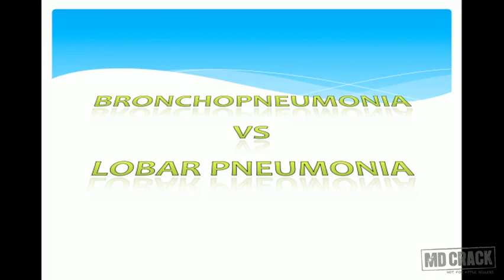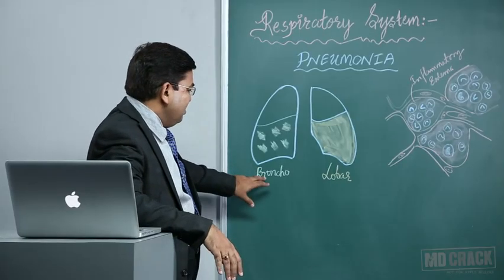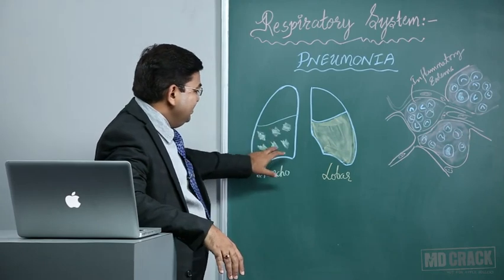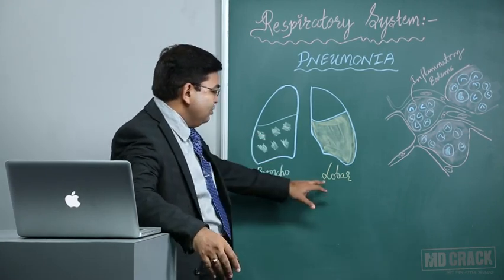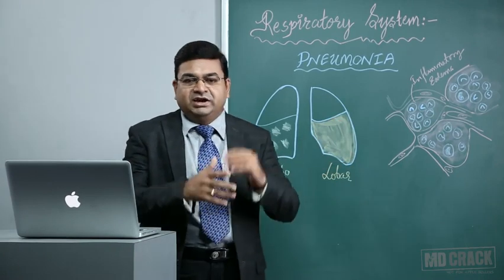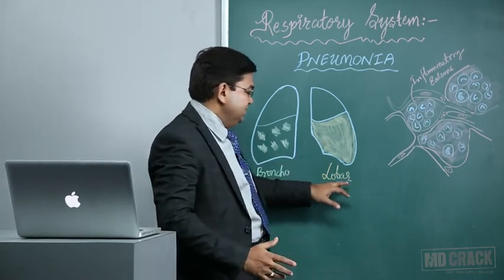Now let us look at the two types of pneumonias important from pathology: bronchopneumonia and lobar pneumonia. Diagrammatically, bronchopneumonia has patchy areas of consolidation. When we use the word consolidation, it means solidification of the lung — lungs are spongy in nature, but when they undergo solidification we use the word consolidation. Lobar pneumonia is when one lobe — either upper or lower — totally undergoes consolidation. In bronchopneumonia there is patchy involvement with normal lung parenchyma in between; in lobar pneumonia, the entire lobe shows consolidation.